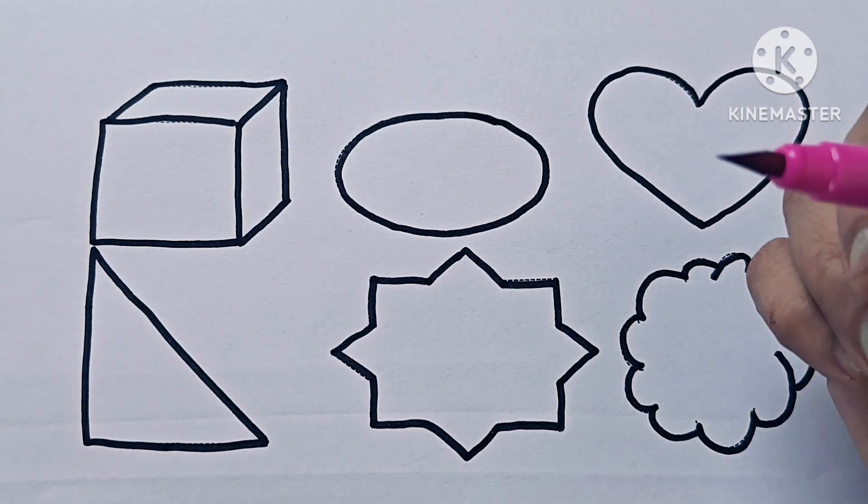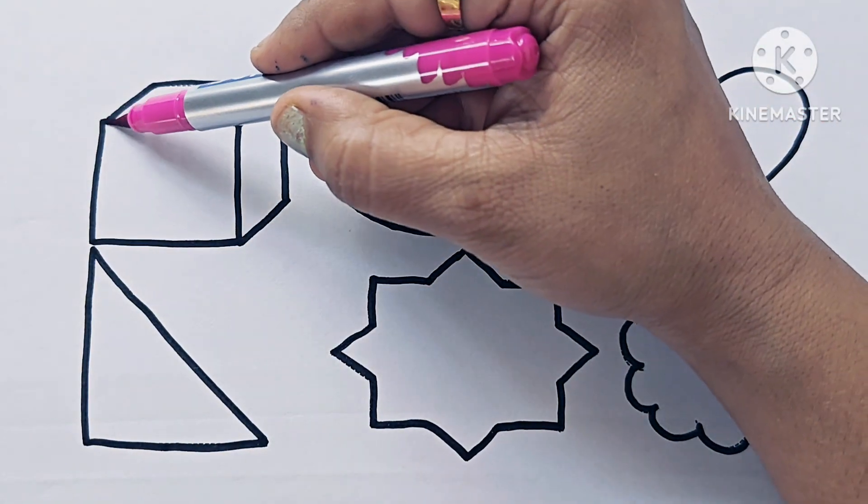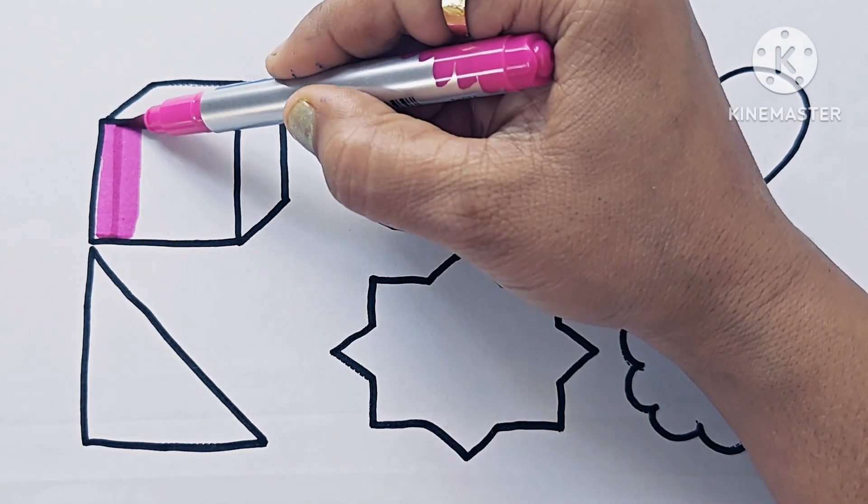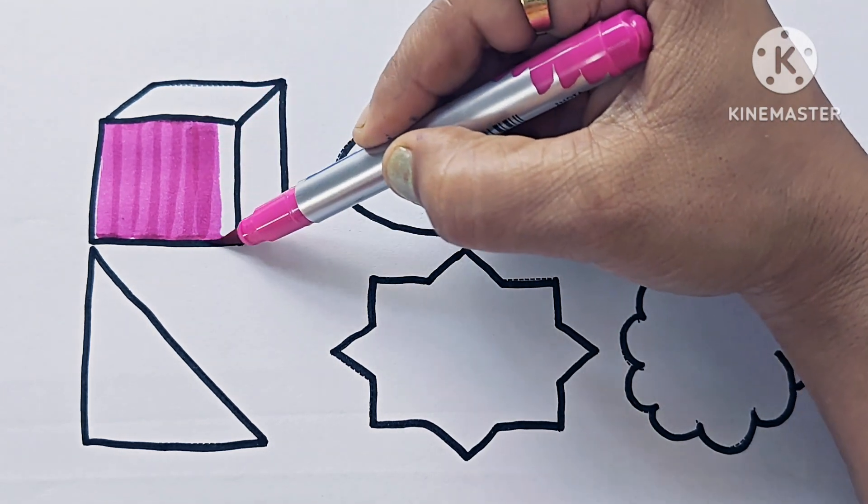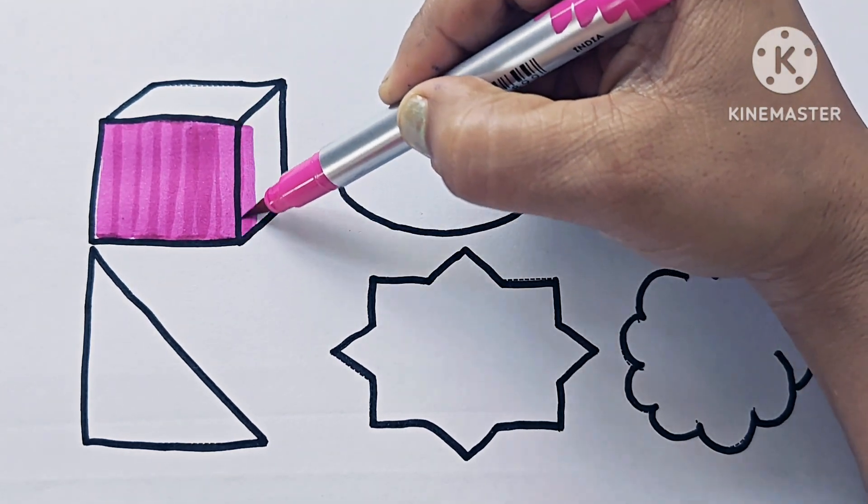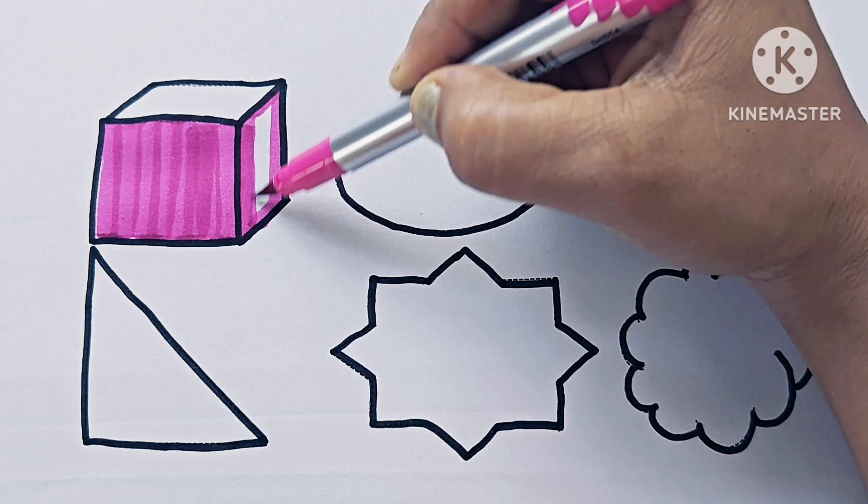This is Pink color. This shape is Cube. Cube has 6 faces, 12 edges and 8 corners. It is a 3D shape.